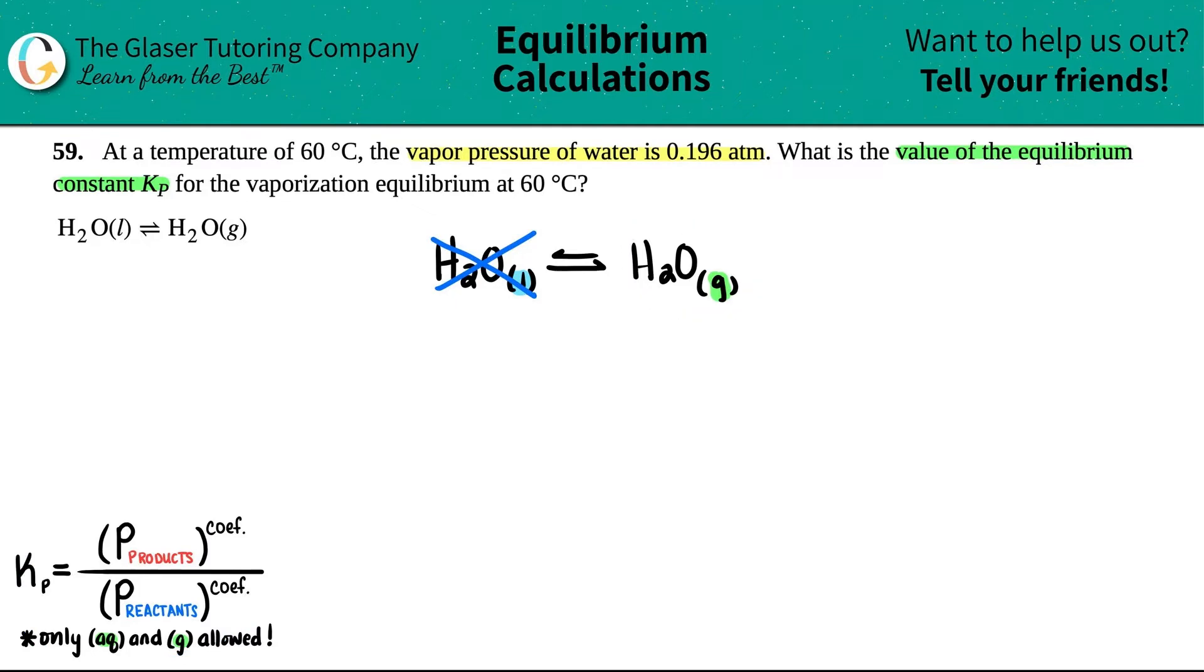Now let's see what they told us. They just told us that at this 60 degrees Celsius, we did have a vapor pressure of water at 0.196 atm. Vapor is basically another way for saying a gas. Water vapor is gaseous water. So this 0.196 atm, that's this number right here. 0.196 atm.